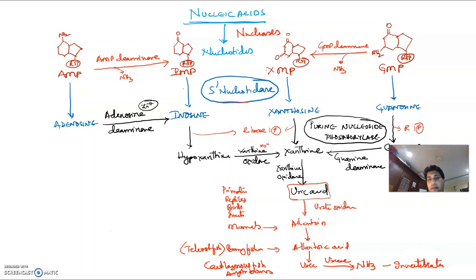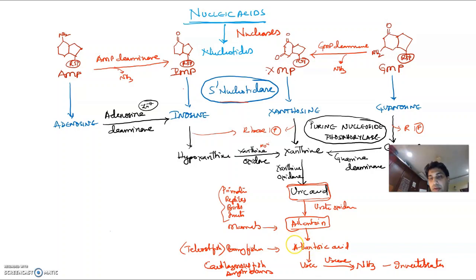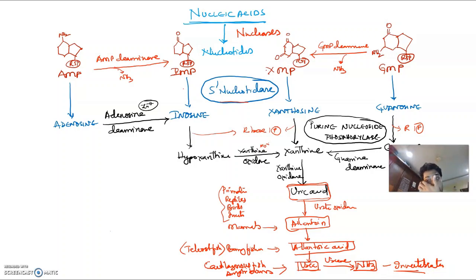Urea is finally excreted as ammonia in the presence of urease by invertebrates. So nucleic acids form nucleotides, which form nucleosides, which form nitrogen bases, and finally uric acid is excreted in primates, reptiles, birds, and insects. Other mammals convert it to allantoin, then allantoic acid (bony fish), then urea (cartilaginous fish/amphibians), then ammonia (invertebrates).